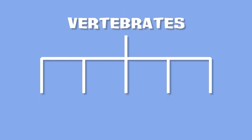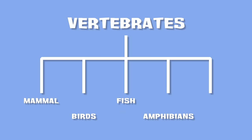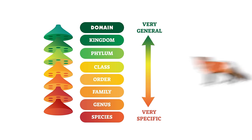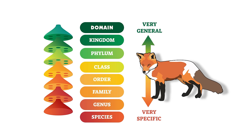The next level in the animal classification chart is class. In this level, invertebrates and vertebrates are separated again. All vertebrates are separated into five classes you will probably recognize: mammals, birds, fish, amphibians, and reptiles. Each level after class — order, family, genus, and species — becomes even more specific until you finally find the exact animal you're looking for.